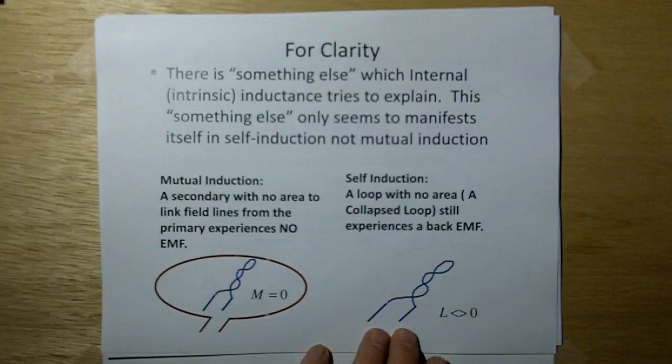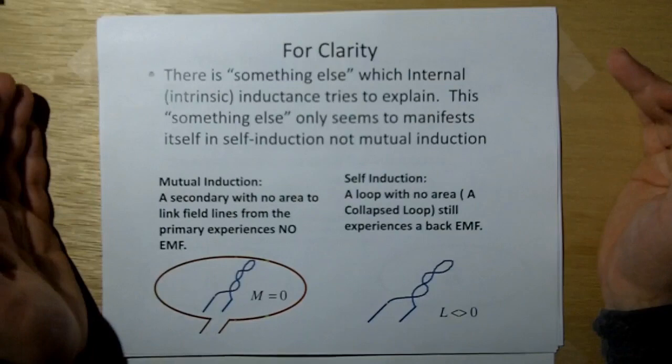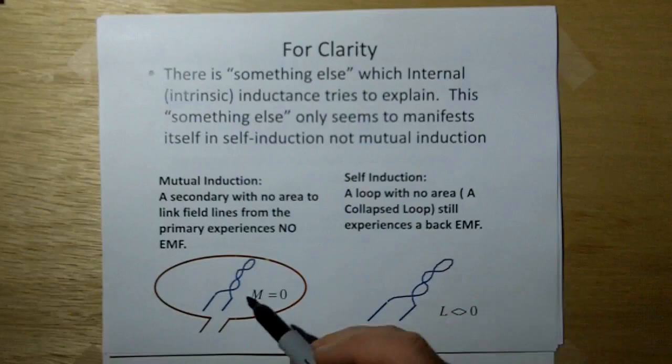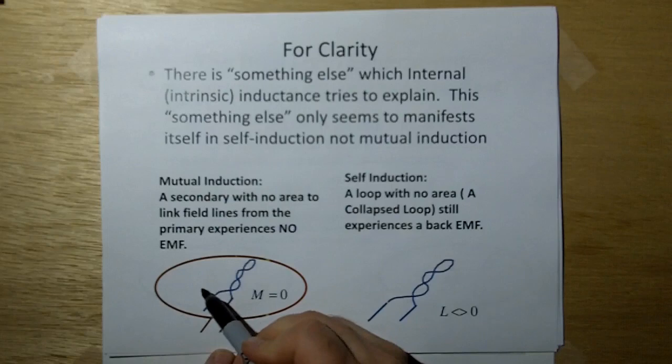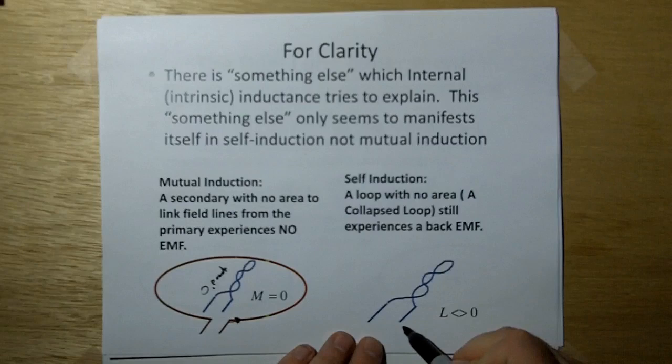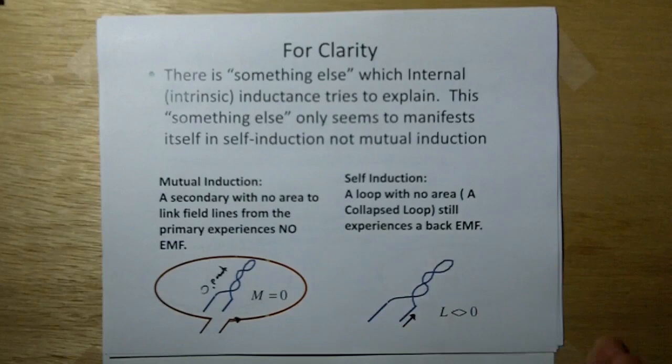Now for clarity, there is something else which internal inductance tries to explain. This internal inductance only seems to manifest itself in self-induction, not mutual inductance. Why? If we had a collapsed loop as the secondary of our mutual inductance experiment and tried to induce a current change, there's no area in here to link the flux, so there should be zero EMF in this collapsed secondary. But it does occur when you try to put the current change in the loop itself. So just for clarity, the internal inductance is only for self-inductance problems.